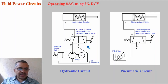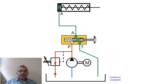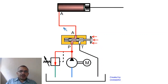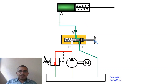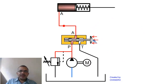Now let us see the animation of the single acting cylinder using the 3 by 2 valve. The pump is running, oil is flowing, but the pump port P of the valve is closed, so oil flows back to the reservoir tank. Port A of the cylinder is connected to the tank port. When I press the palm button of the 3 by 2 valve, P is connected to A — oil flows to the cylinder and the cylinder extends. When I release the palm button, A is connected to T and oil flows back to the reservoir. So pressing the button extends, releasing retracts. This is how the circuit functions.